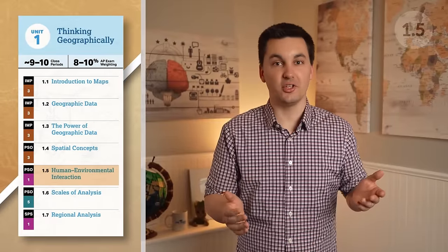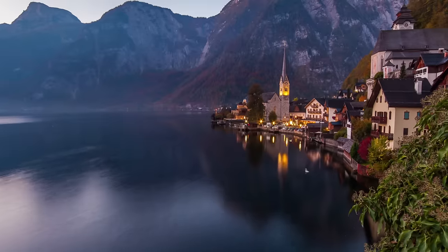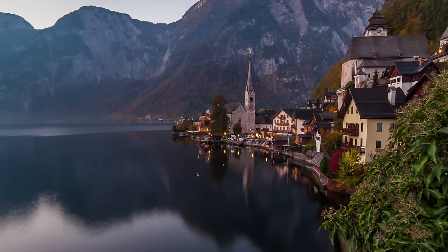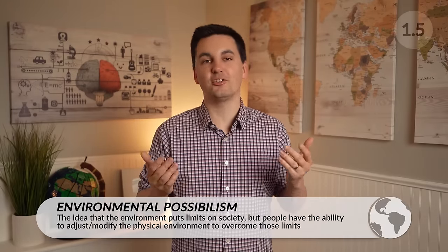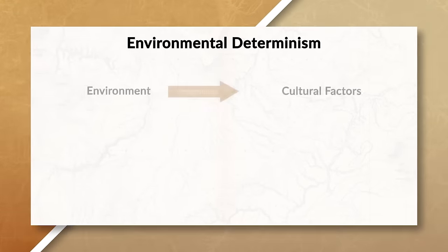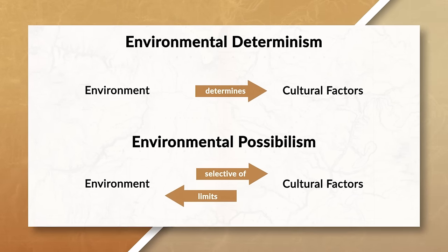Now we need to talk about how places interact with the environment. Society impacts the environment and the environment in turn impacts society. The idea of environmental determinism looked at this relationship. Determinism believes that the environment dictates the success of a society — certain environments allow it to thrive while others restrict it. Over time, people criticized environmental determinism for promoting European imperialism and discounting the role of humans to adapt. Today, many people believe in environmental possibilism, which is the idea that the environment puts limits on a society but people have the ability to adjust the physical environment and create their own success.